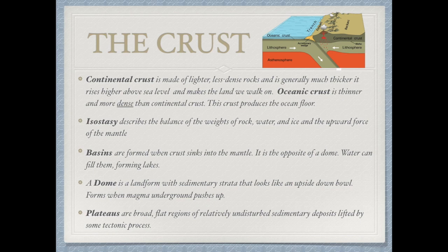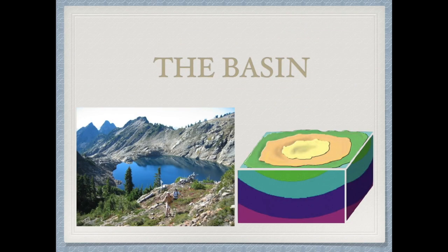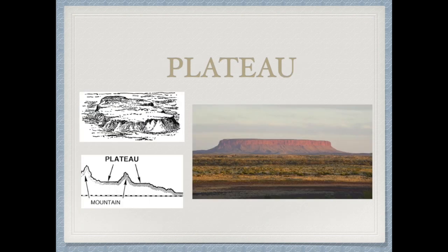A basin is formed when the crust sinks into the mantle — it's the opposite of a dome. Water can fill basins, forming lakes, so it's a dip down, kind of like a valley. A dome is the opposite: it's a landform where sedimentary strata are pushed up, looking like an upside-down bowl, forming when magma pushes through before creating a mountain. Plateaus are broad, flat regions formed from sedimentary deposits. A basin is the indentation going down that can be filled with water forming a lake, while a plateau is flat sedimentary rock that can be between mountains or by itself.